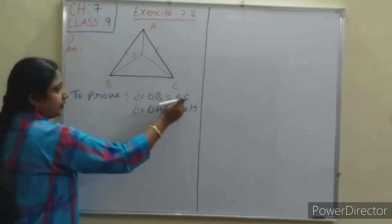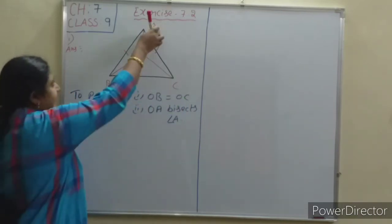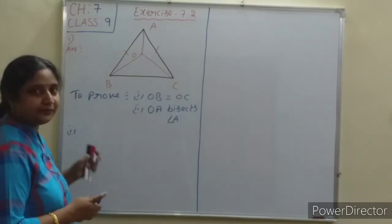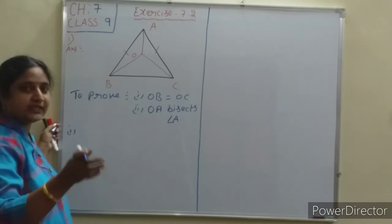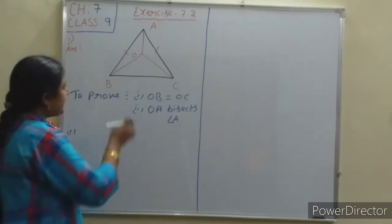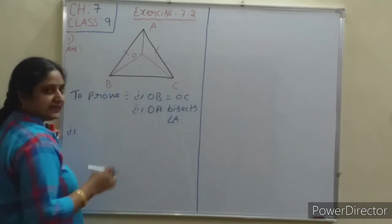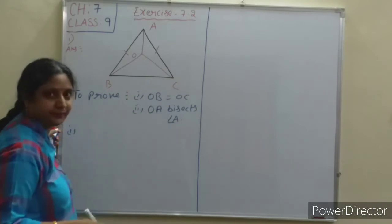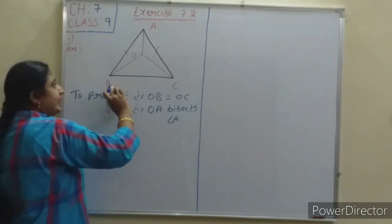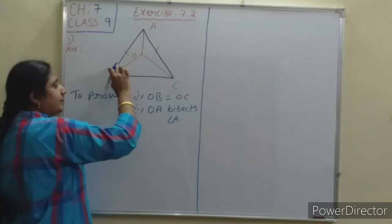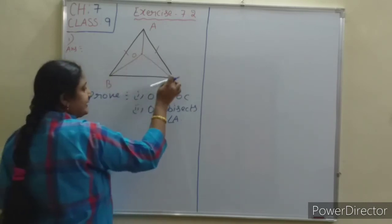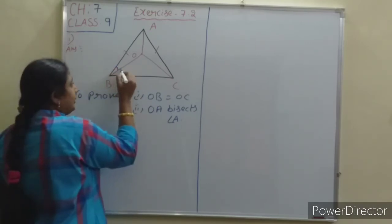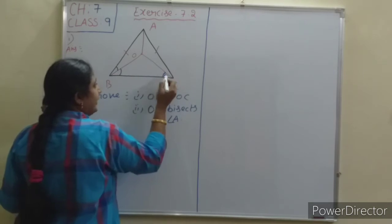Now we are trying to prove OB equals OC. In isosceles triangle ABC, angles opposite to equal sides are equal, so angle B equals angle C. OB is the bisector of angle B and OC is the bisector of angle C, which means these two pairs of angles are equal.